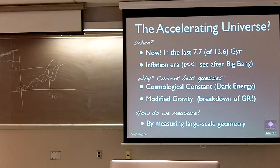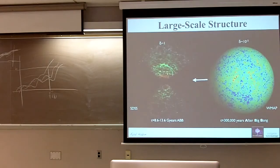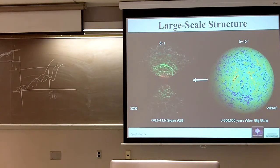Another thing that people are working on is modifying general relativity — maybe it breaks down at large scales. That's something I'll try to convince you we have a method of testing: not only on solar system scales, but also for the universe at large. I'll do so by measuring the geometry of the universe.